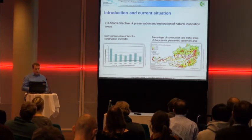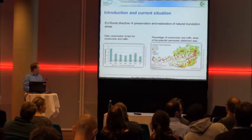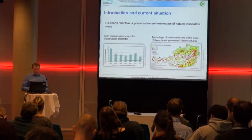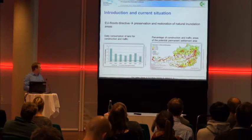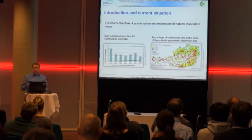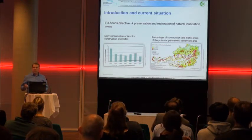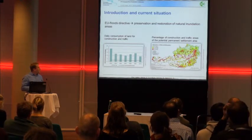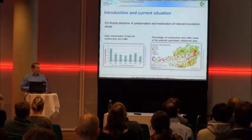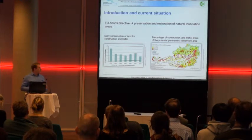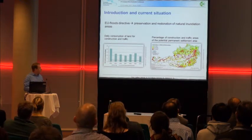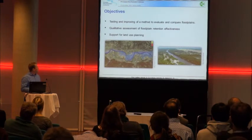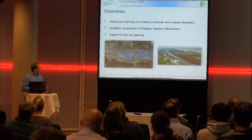The EU Floods Directive demands the preservation and reservation of natural inundation areas. Looking at the daily consumption of land for construction in Austria for the periods 2004 to 2010, as well as the target value of the Austrian sustainability strategy - 2.4 hectares per day - you can see this value was exceeded each year. Looking at where this land consumption takes place, especially in mountainous regions like Tyrol, the valleys are densely populated and many types of land use compete for this limited space, which threatens the floodplains. At the moment we are losing floodplains but we don't know how efficient they are - therefore I tested and improved this method at a smaller river to evaluate and compare these floodplains.